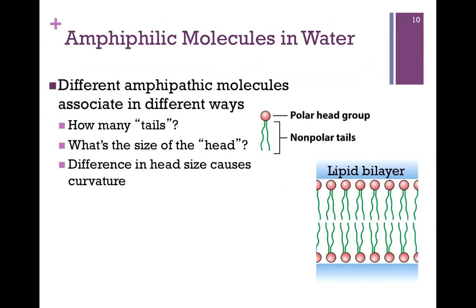In the case of a lipid where you have a polar head group and two non-polar tails, you can see the geometry is more rectangular. So these tend to associate into lipid bilayers, and this is, in fact, what makes up our cellular and subcellular compartments. Again, the non-polar tails are in the internal environment, and the polar head groups face outward towards the aqueous environment on either side of that membrane.